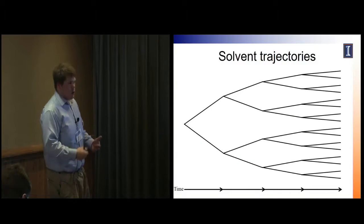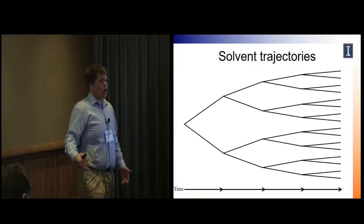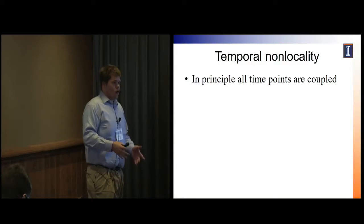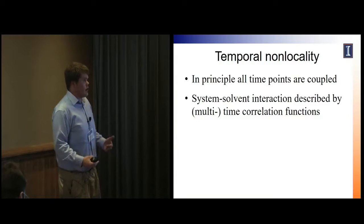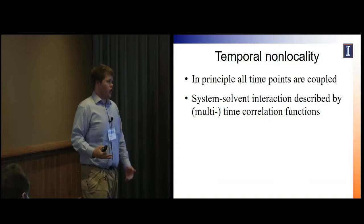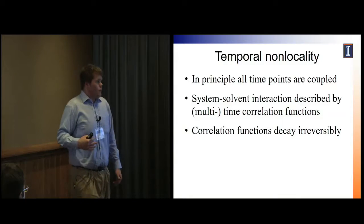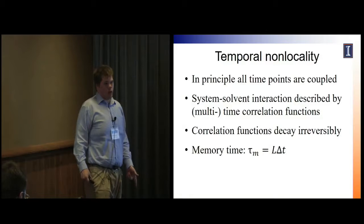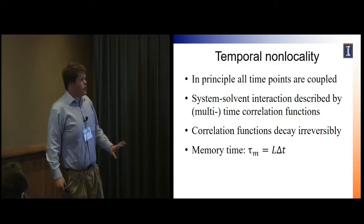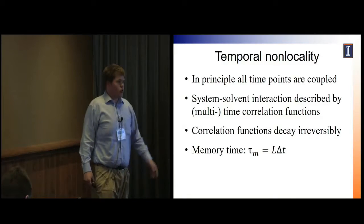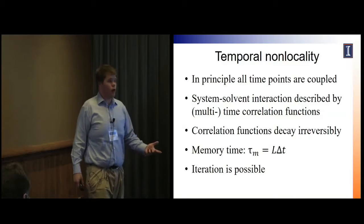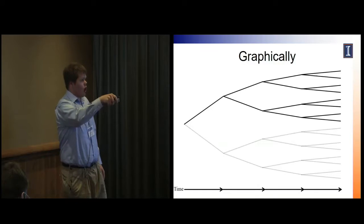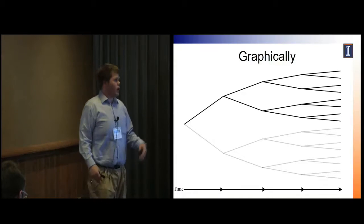The problem is that extending this leads to an exponentially increasing number of trajectories with the number of time steps. In principle, all time points are coupled, so what happens at earlier time points affects later ones, giving exponential growth. However, the system-solvent interaction we're interested in is described by time-correlation functions that decay irreversibly. So the dependence on earlier time points effectively goes to zero. We define a memory time beyond which we can ignore the earlier time points, determined by convergence. This allows us to iterate and keep the number of paths fixed rather than exponentially increasing.